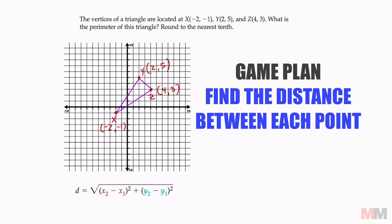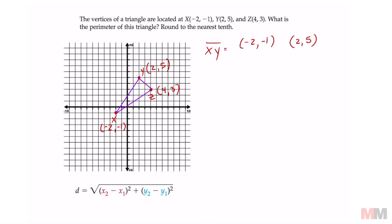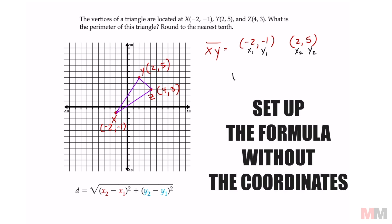Let's look at segment XY first. That has the coordinates negative 2, negative 1, and 2, 5. Whenever I go over the distance formula, I always have my students label stuff first — that way they don't get confused. So that's going to be x1, y1, x2, y2. The second trick is to set up the square root symbol from the formula right away.